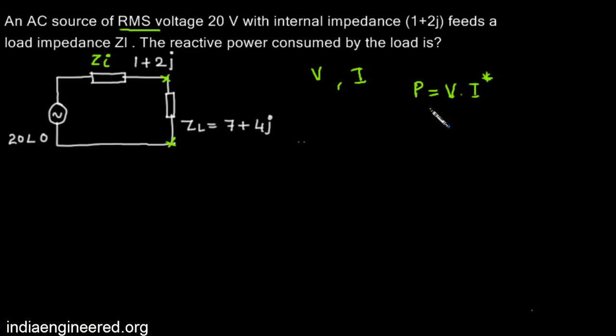First we will find out the current through the circuit. It will be 20 divided by the total resistance, that will be 1+2j plus 7+4j, which will be 8+6j. We can use calculator to find out its value.